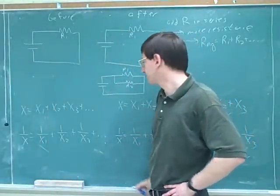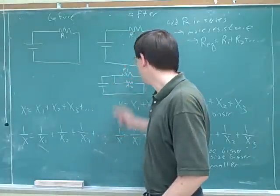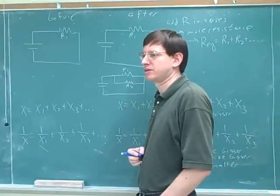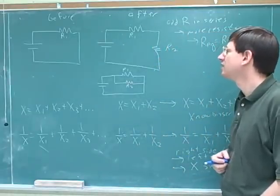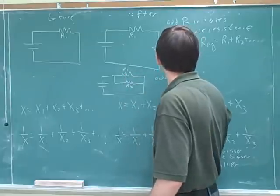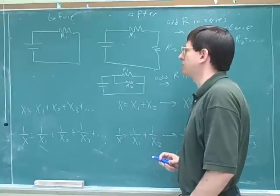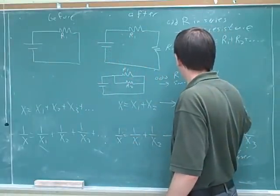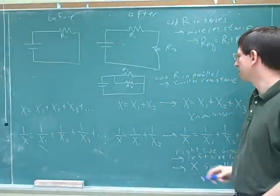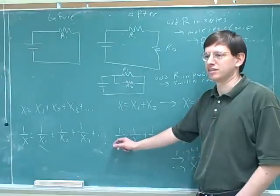Now here's the before and after picture for parallel. What we've done is opened two different paths that the current can go through — there are more paths available. If there are more paths, should that make it easier or harder for current to move? It should make it easier, because there are more places it can go. So here we've added a resistor in parallel. When we add a resistor in parallel, does that make the resistance bigger or smaller? Smaller — there's less resistance. So do we want the sum formula or the reciprocal formula? The reciprocal, because in the reciprocal formula, adding a new device decreases the total x.